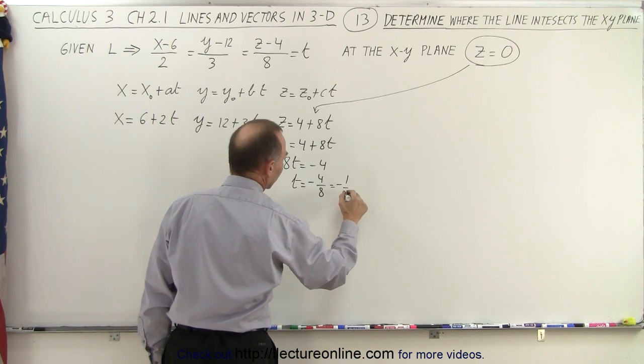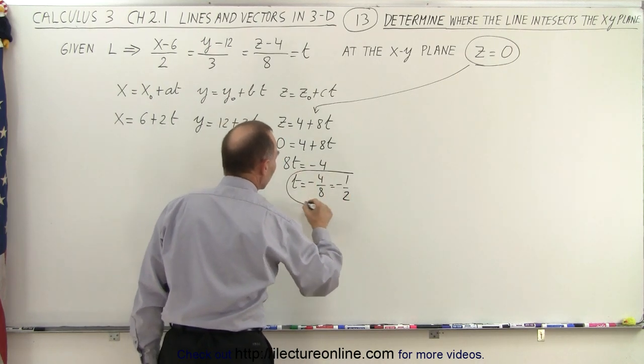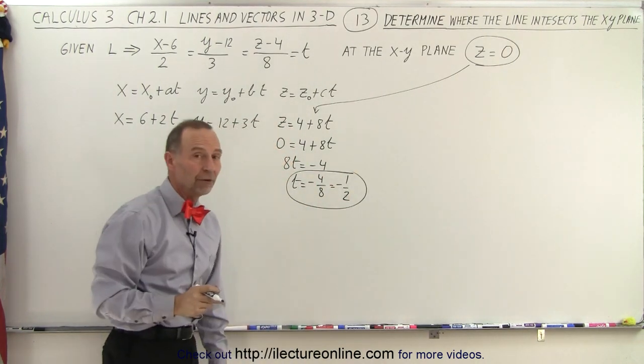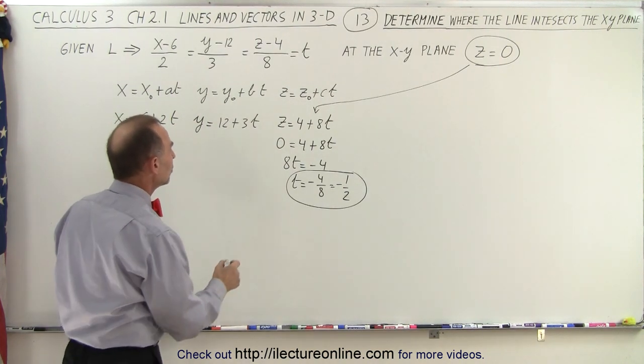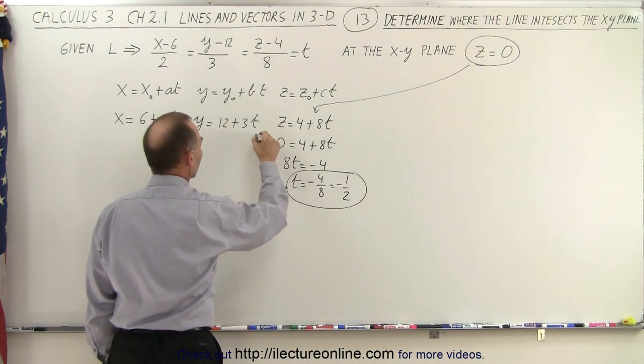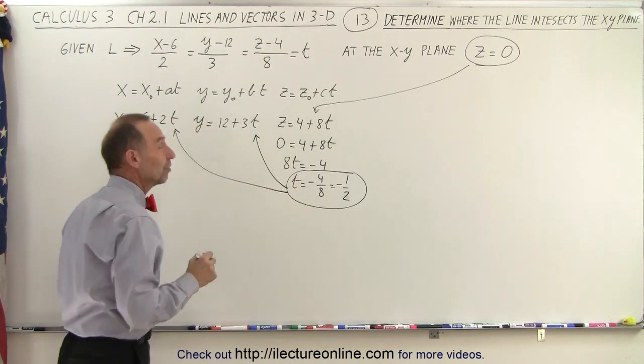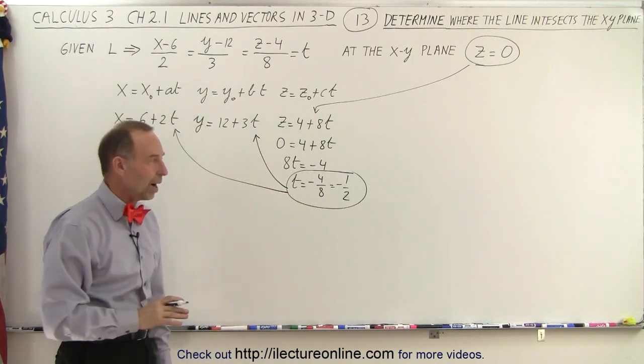That should be a 2. Let me try it again. And notice we now have a value for t in our parametric equations. What we can do now is plug that in to our other two parametric equations and solve for the values of x and y.